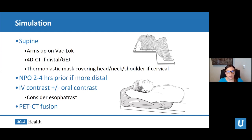For superior or cervical esophageal cancers, we use a thermoplastic mask covering the head, neck, and shoulders for better immobilization. For GE junction tumors, we perform a four-dimensional CT to account for respiratory motion and understand how the target moves through different phases of the breathing cycle. For distal esophageal cancers, we ask patients not to eat or drink two to four hours before treatment to keep the stomach smaller and reduce treatment volumes. Patients are simulated with IV contrast, and PET-CT fusion helps identify the target accurately.